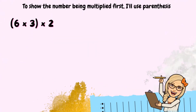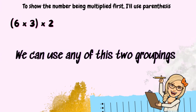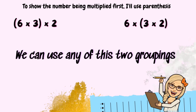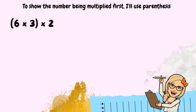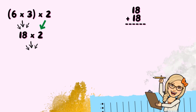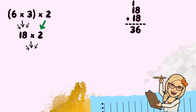Let's do the first step. I'm going to use this grouping. Let's begin multiplying: 6 times 3 equals 18, then 18 times 2. Remember that we can use repeated addition: 18 times 2 is the same as 18 plus 18. 8 plus 8 equals 16, we put the 6 in the ones place, carry the 1 to the tens place, then add the tens place, which gives us 3, so my answer is 36.